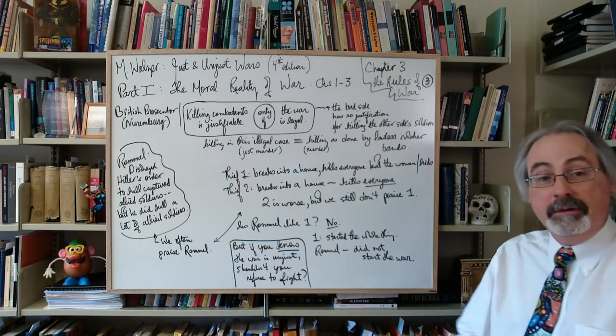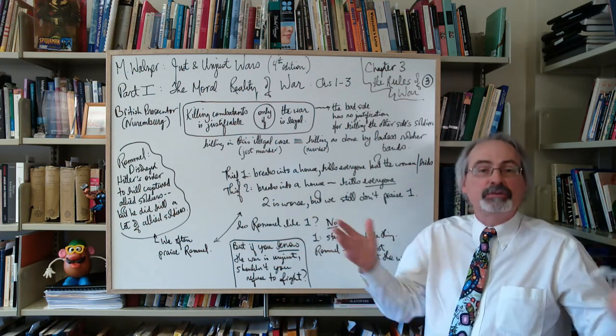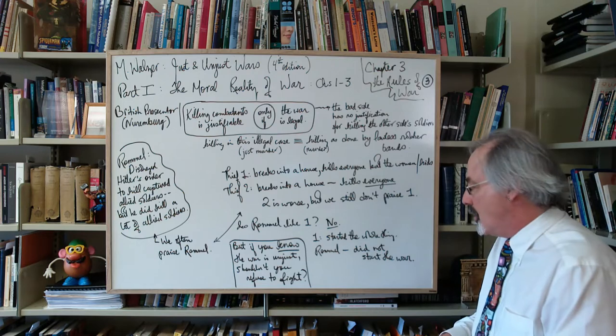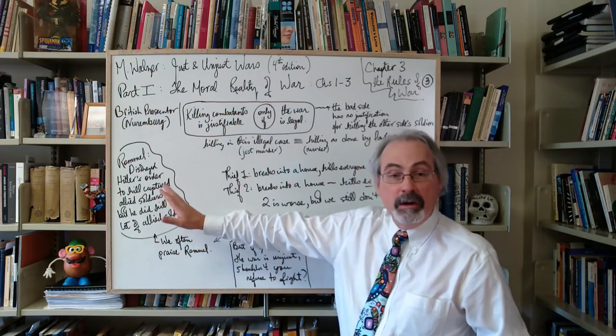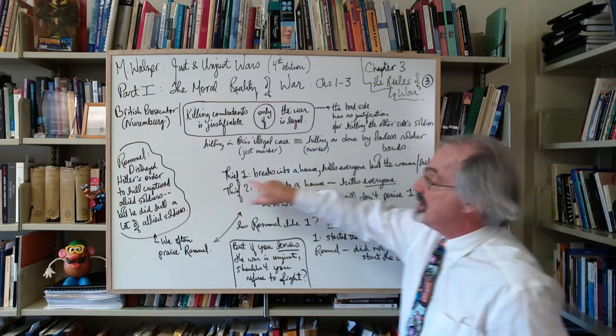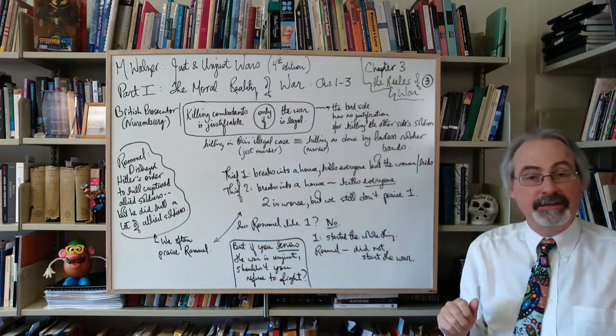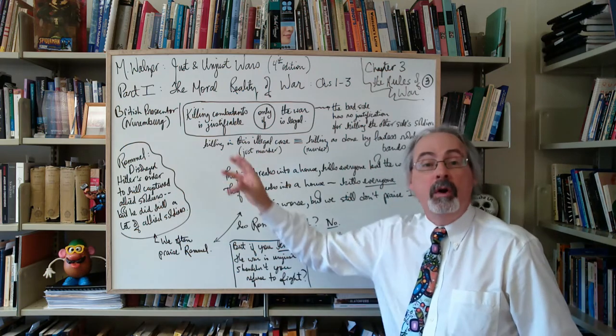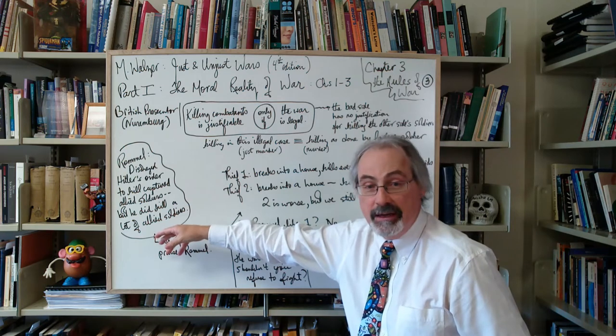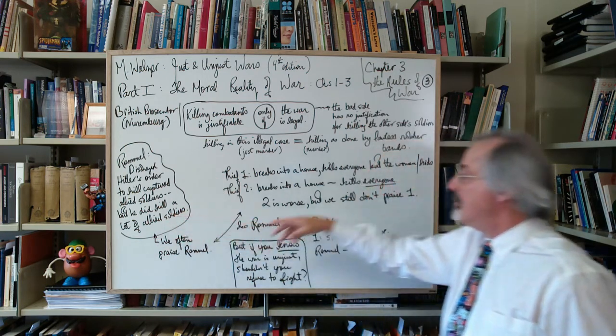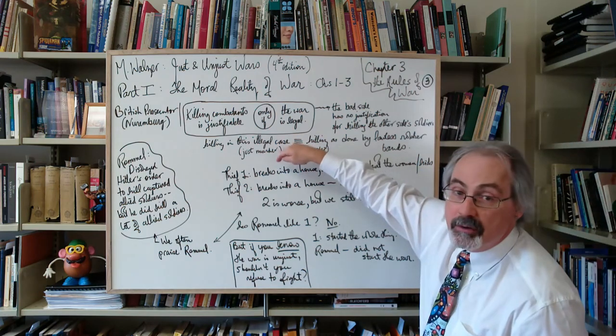So Rommel, again going back to Walzer's view, Rommel's a soldier—even if he's a general—but he didn't start the war. That's why we say we're not holding him responsible for the analogy. The break-in would be the war. The whole war is kind of analogous to the break-in, and then the behavior is within the break-in or within the war. Rommel's not responsible for the war. Thief one is. Rommel doesn't kill captive soldiers, so we praise him. But thief one kills people, and we're not going to praise him because he is responsible for this.